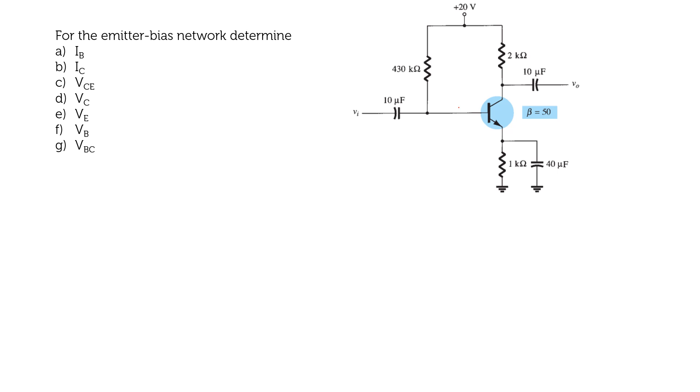For the emitter bias network, determine IB, IC, VC, VCE, VE, VB, and VBC.